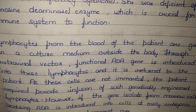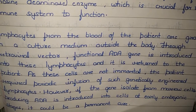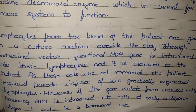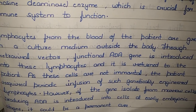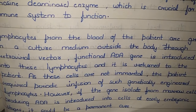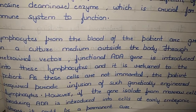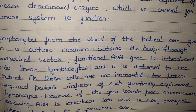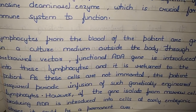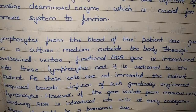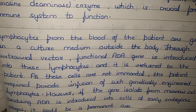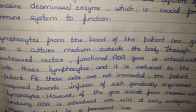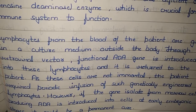However, if the ADA gene isolated from marrow cells is introduced into cells at an early embryonic stage, it could be a permanent cure. If detection of the hereditary disease happens at the embryonic stage, gene therapy performed at that time can completely cure the patient without needing periodic infusions.